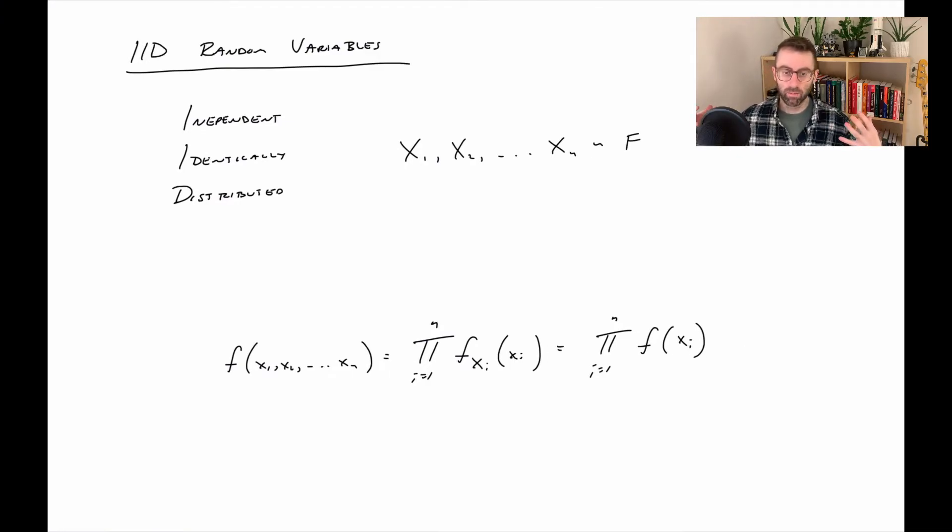But most importantly, there's one type of collection of random variables that we're gonna see very often in this class, and those are IID random variables. That means independent and identically distributed. That means that all of the variables are independent and they all have the same marginal distribution. So oftentimes when we do that, we call those random variables taken together as a random sample. And this little n would be called the sample size.